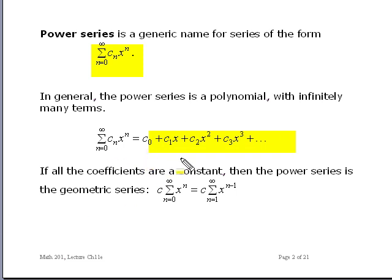If all of these constants, c₀, c₁, c₂, c₃, were all equal to some constant called c, you could factor it out and you would be left with a geometric series.